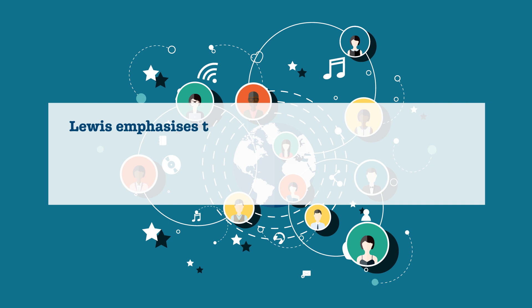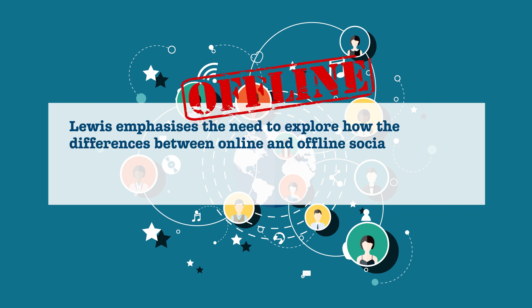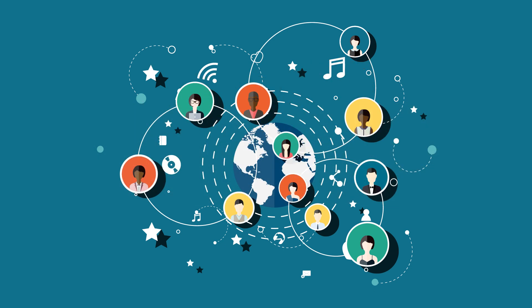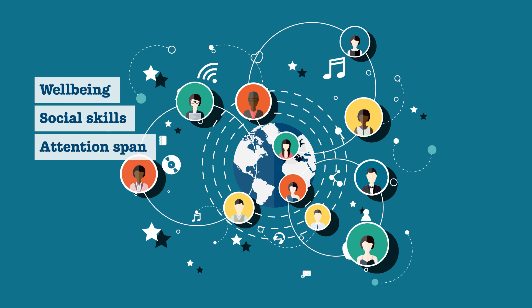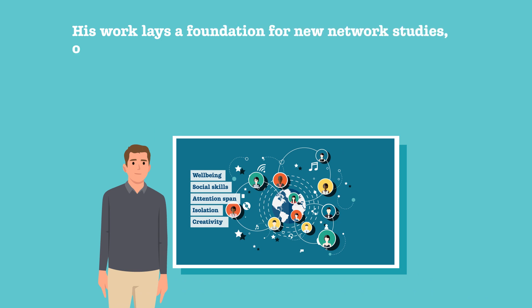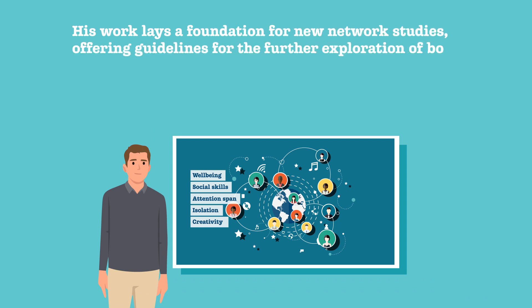Finally, Lewis emphasizes the need to explore how the differences between online and offline social networks can influence relationships, the reach and structure of resulting social networks, and other crucial outcomes, such as people's well-being, social skills, attention span, experiences of isolation, and creativity. His work lays a foundation for new network studies, offering guidelines for the further exploration of both digital and in-person social ties.